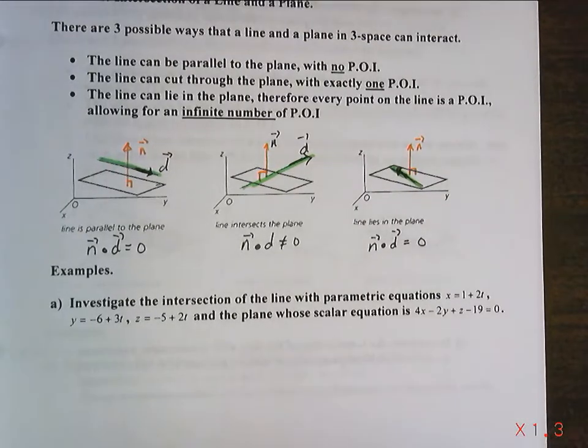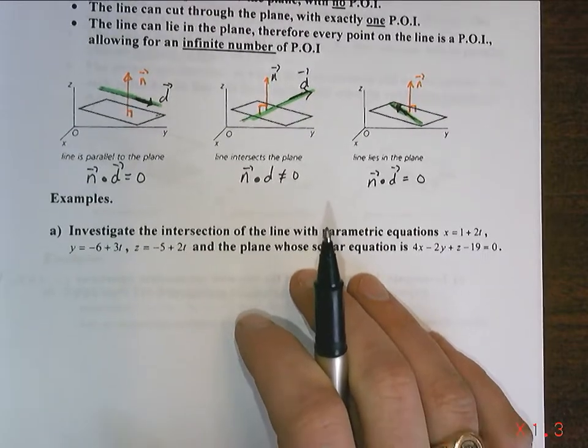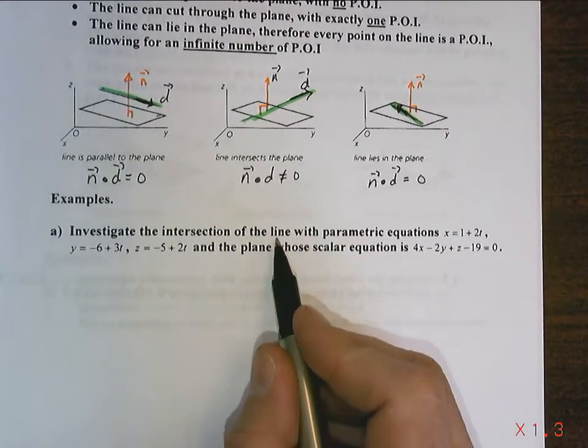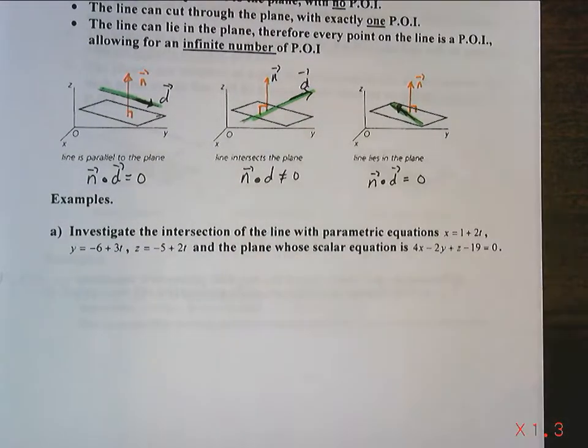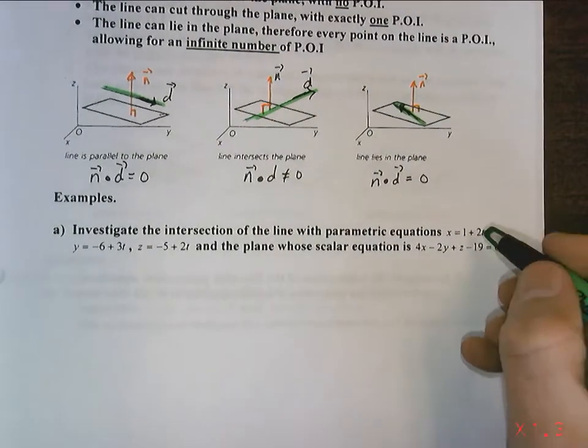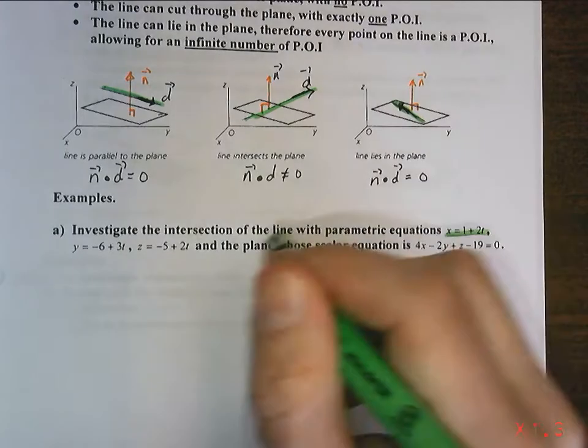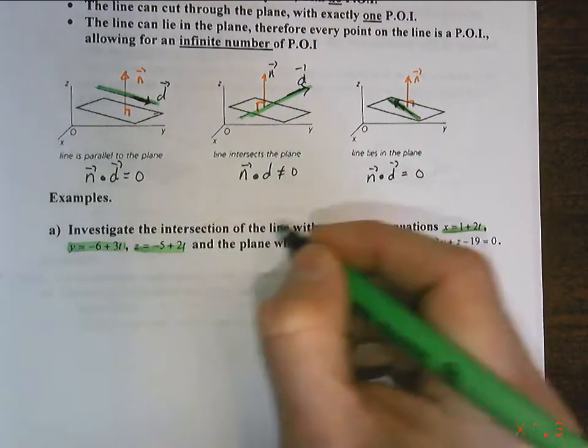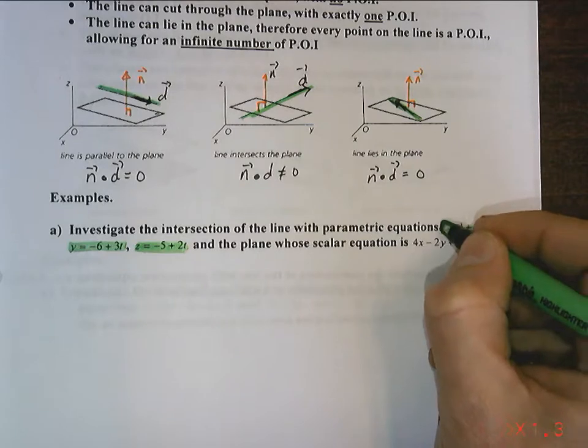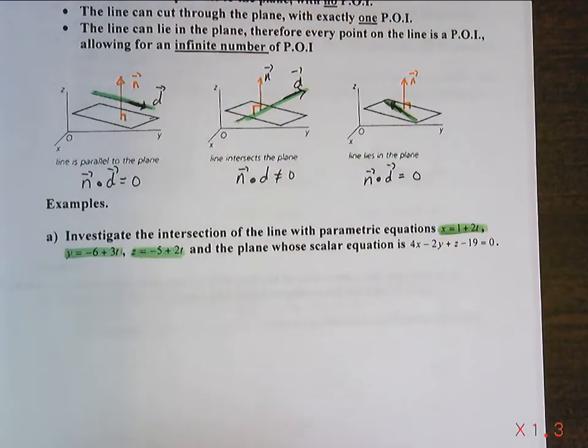Okay, welcome back. Now we're going to start looking at example A. What we want to do is investigate the intersection of a line with these parametric equations. So these are the parametrics for the line. There's this one, there's this one, there's this one. Those are the parametrics for the line.